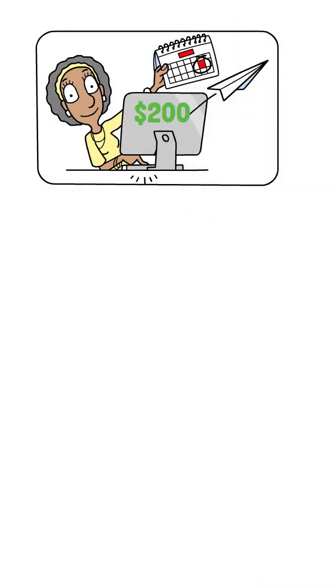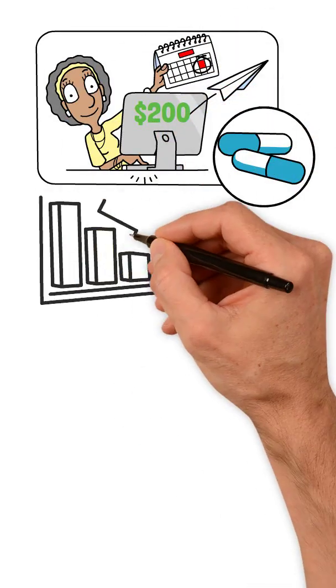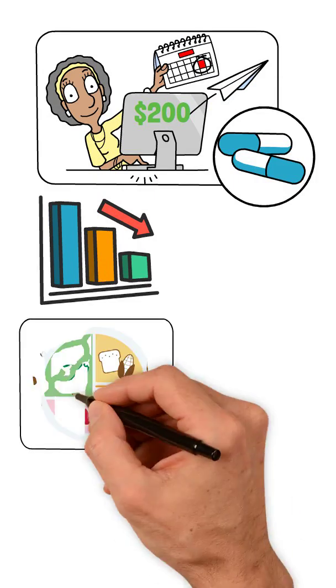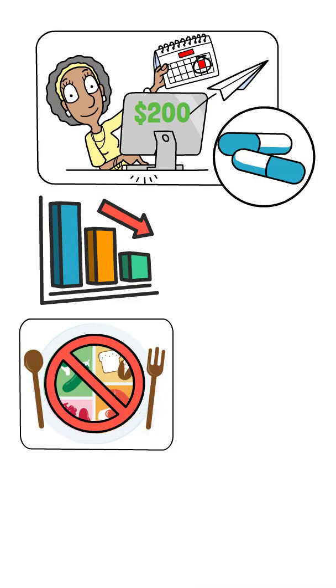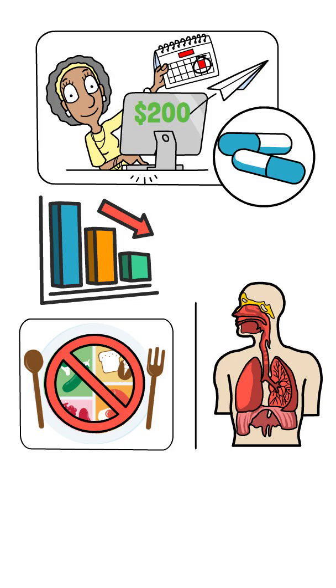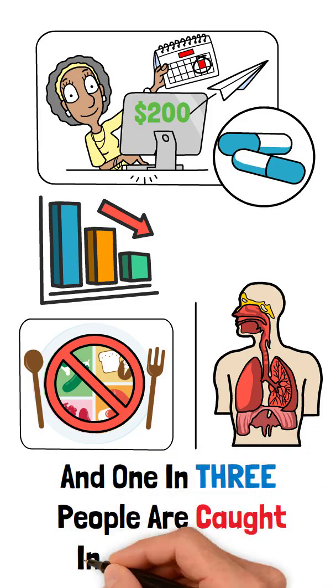Every month, she spends $200 on supplements, yet her deficiencies are getting worse. This is not a diet problem. This is a malfunctioning absorption system, and one in three people are caught in it, silently.